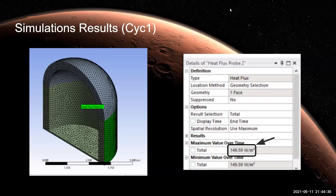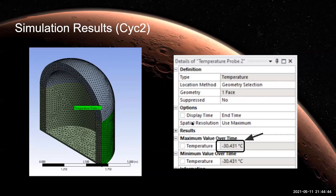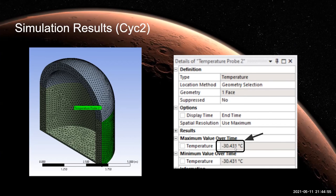The total heat flux leaving cylindrical surface came out to be 149.59 watt per meter square. Similarly, we perform same simulations to find out temperature of this cylindrical outer surface and it came out to be minus 30.431 degree celsius.